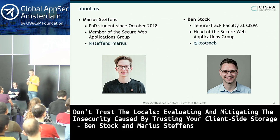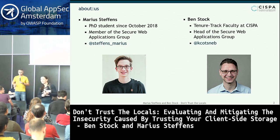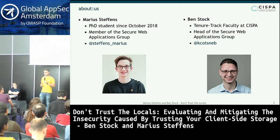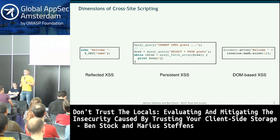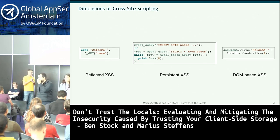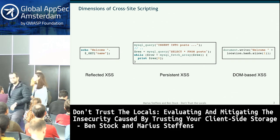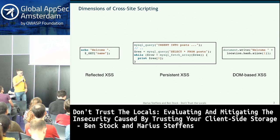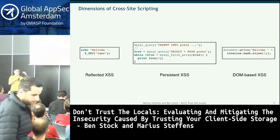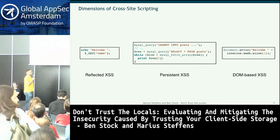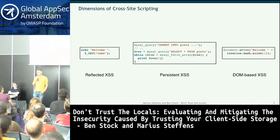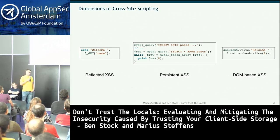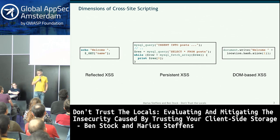This talk is about XSS. If you look at the XSS cheat sheet on OWASP or open a textbook, it will tell you there are three types of cross-site scripting: reflected XSS, exemplified here in PHP with a GET parameter echoed back; persistent XSS, with server-side storage like SQL or NoSQL databases; and DOM-based XSS.